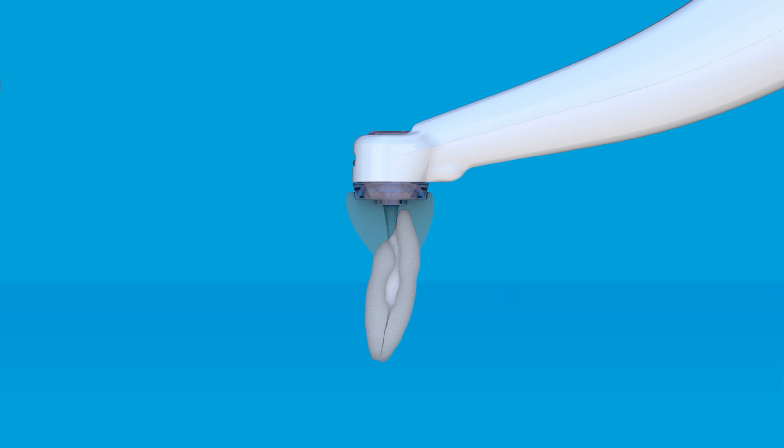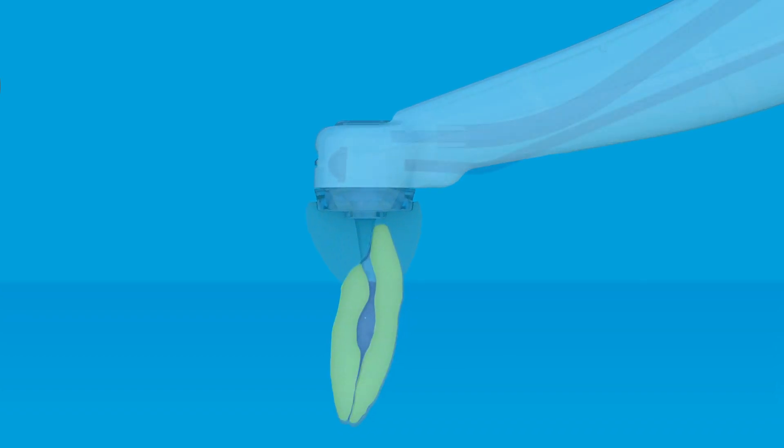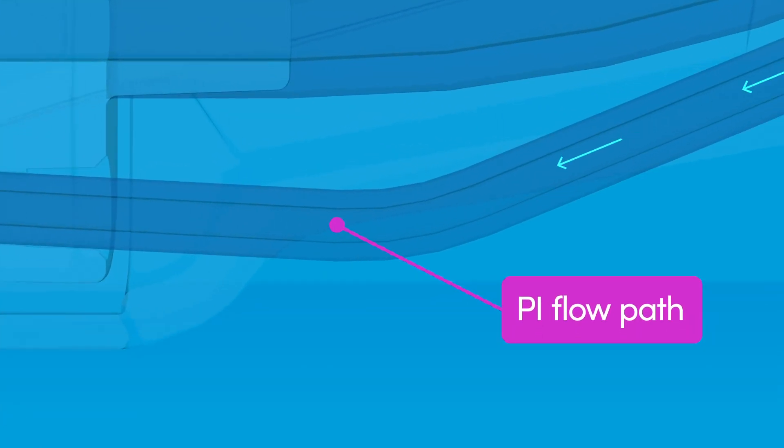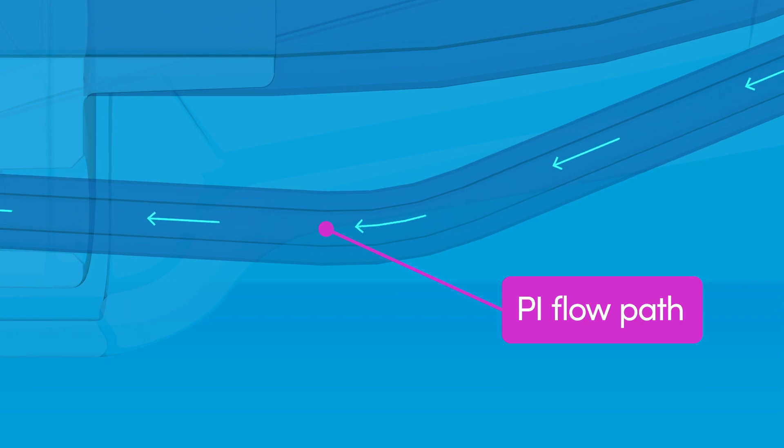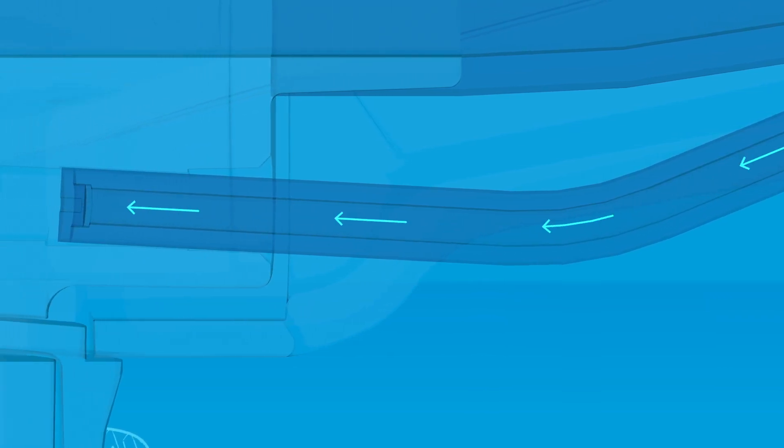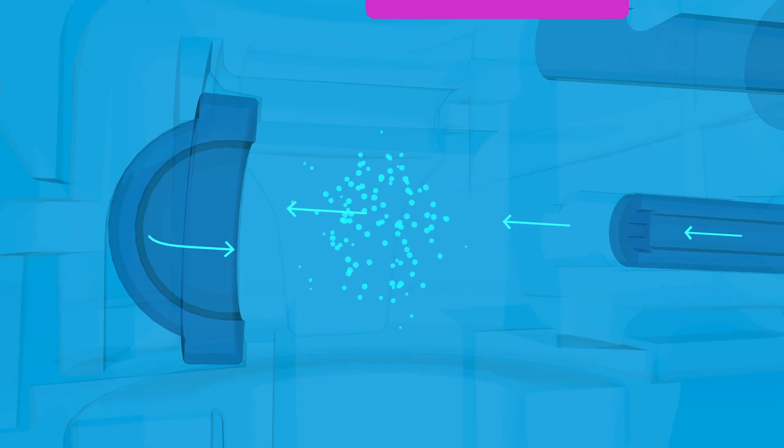A high-pressure stream of degassed fluid enters the clean flow PI flow path, and the mechanism of action begins. When the stream of fluid exits through the nozzle, the stream is converted into a collimated jet.